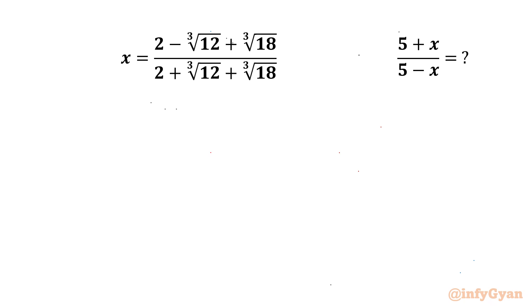Here we have to evaluate (5 + x) over (5 - x), where x is equal to (2 minus cube root 12 plus cube root 18) over (2 plus cube root 12 plus cube root 18).